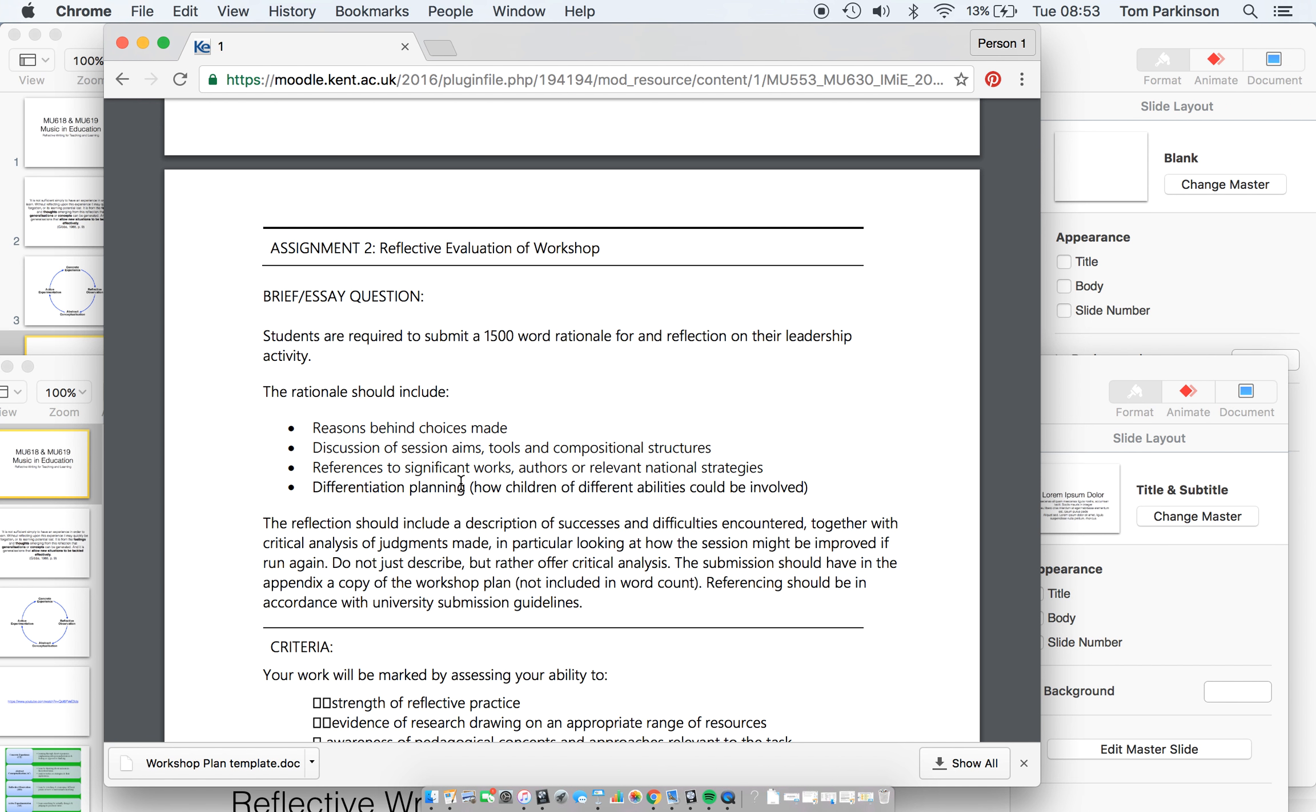Differentiation meaning differentiation within the classroom. So not only pitching it at a year eight classroom, but also thinking about that within that classroom there are going to be children of different abilities. And your aim is to provide a worthwhile and meaningful learning experience for all. Okay. Which means that you have to differentiate to give support where needed and make your activity accessible to those different students.